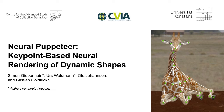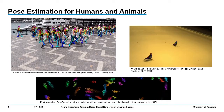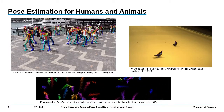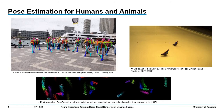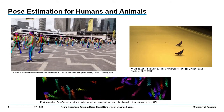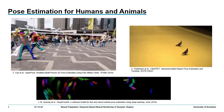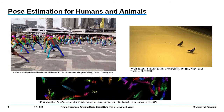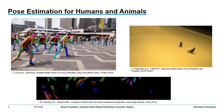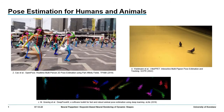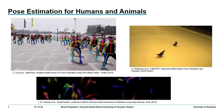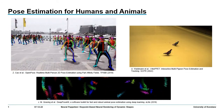In this work we present a keypoint-based neural rendering approach for dynamic shapes called Neural Puppeteer. Pose estimation is one of the fundamental problems in computer vision and a crucial task in many vision applications, ranging from sports to human-computer interaction to the study of collective behavior.